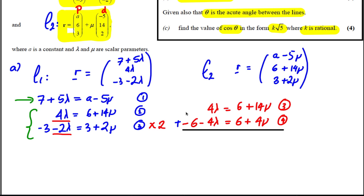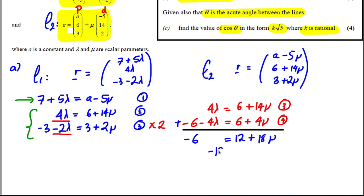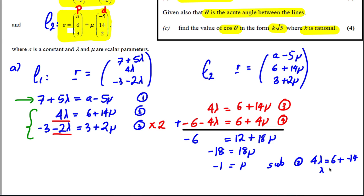Adding the two equations eliminates λ. We get −6 = 12 + 18μ, so subtracting 12 from both sides gives −18 = 18μ, and therefore μ = −1. Substituting into equation 2: 4λ = 6 + (−14) = −8, so λ = −2.